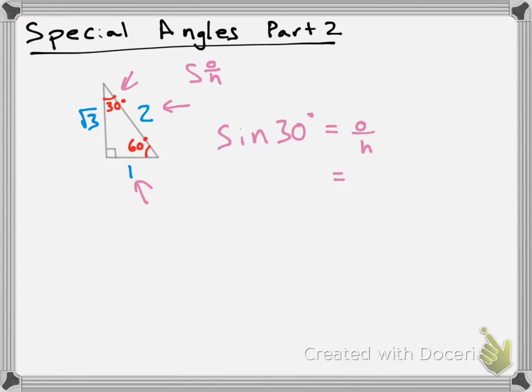So opposite is 1, hypotenuse is 2, so sine of 30 is 1 over 2 in exact form. Take care, guys.